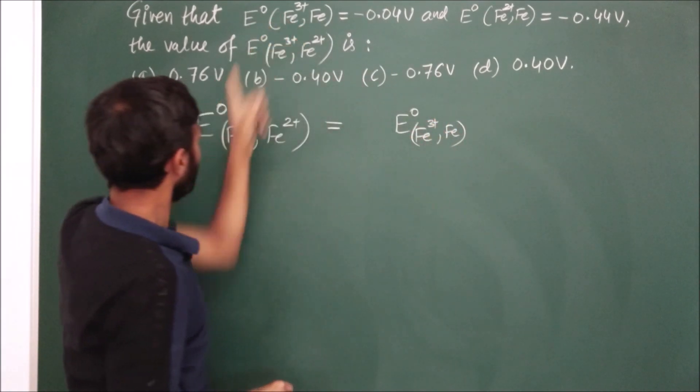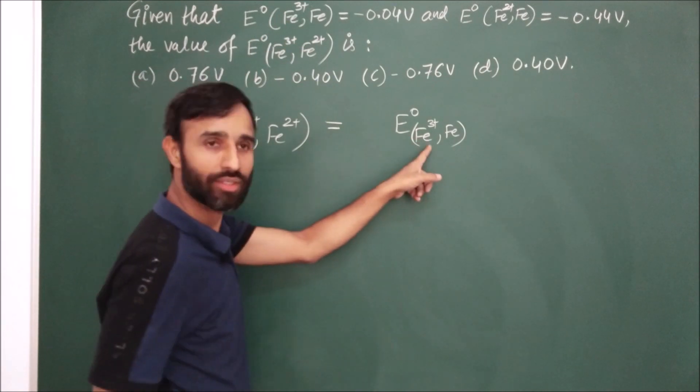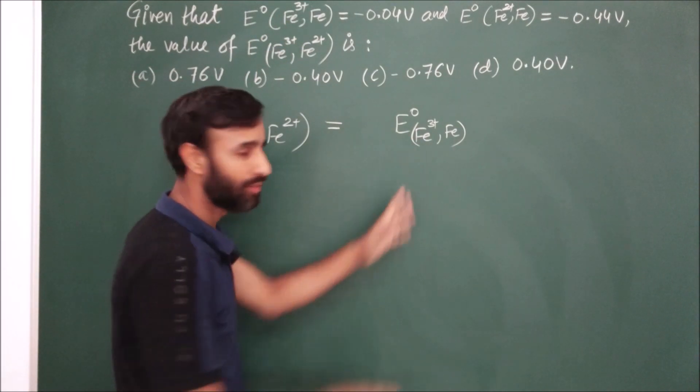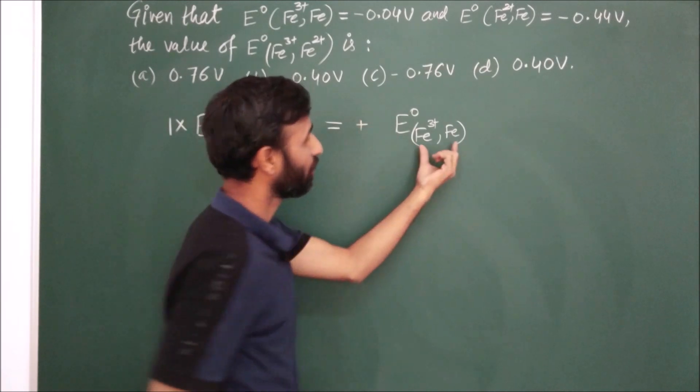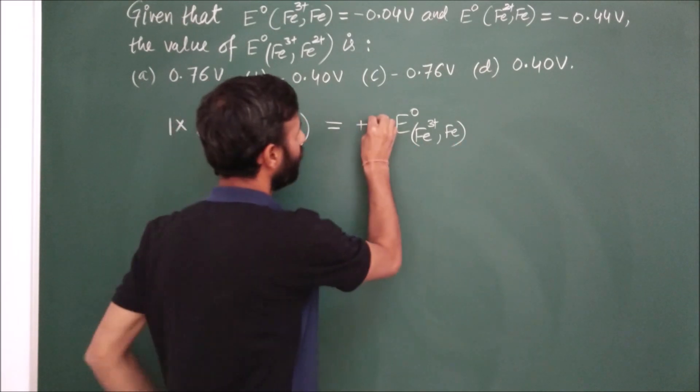How do we go? Fe3+ on left side? Left side. On left side, plus sign. And how many electrons are involved? Three. So three times.